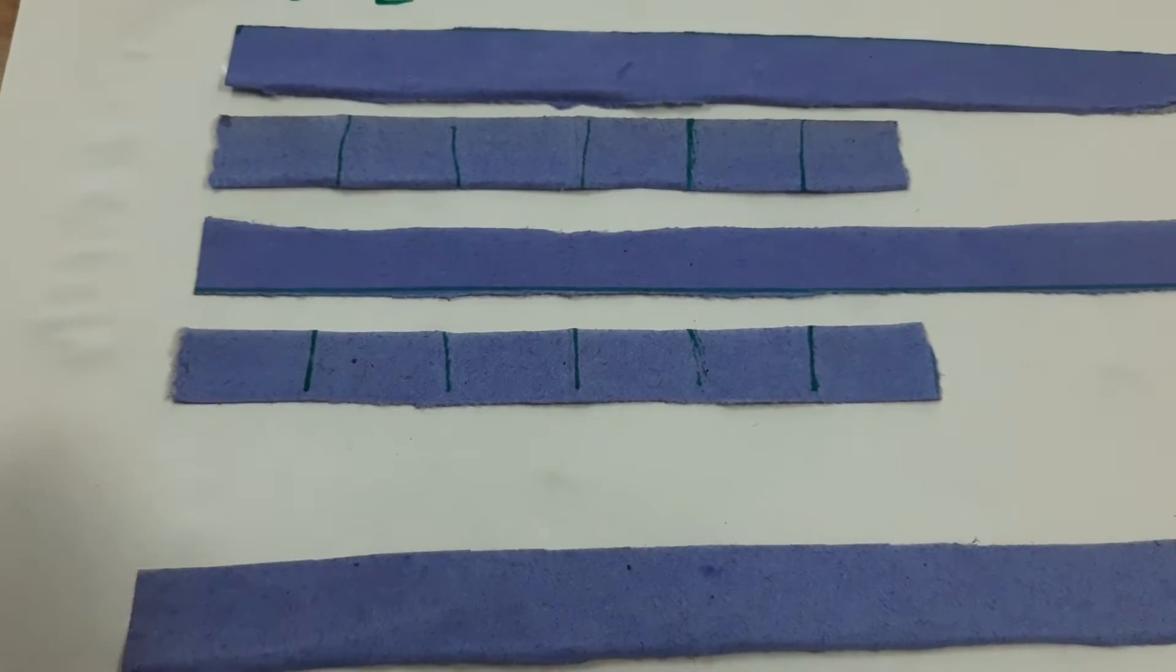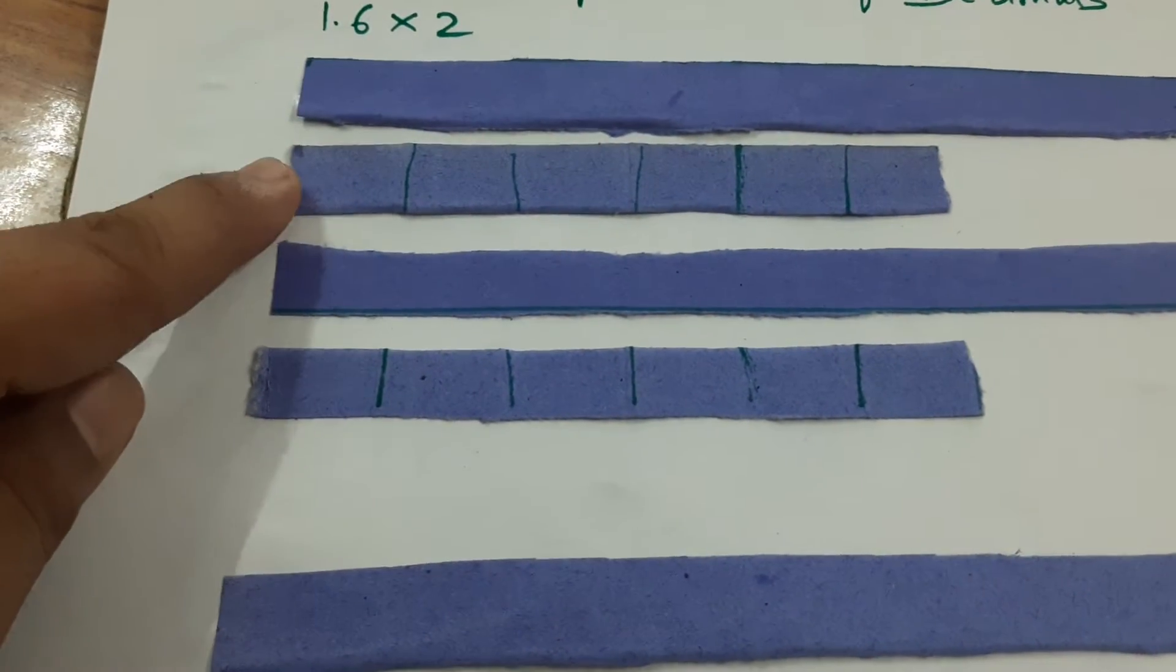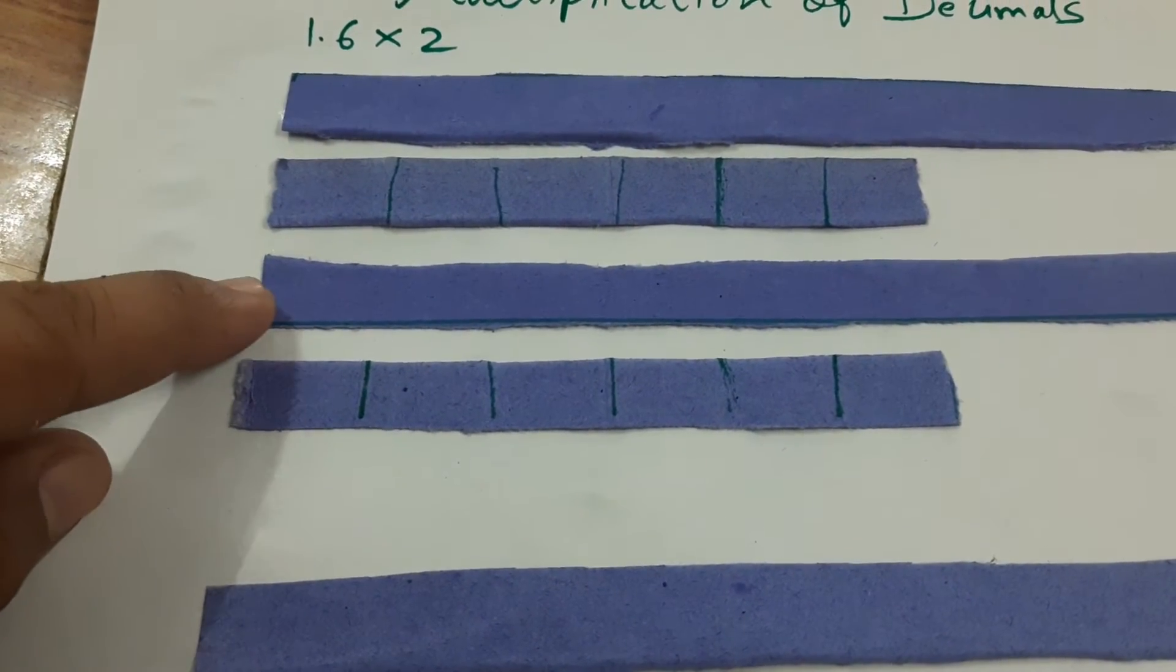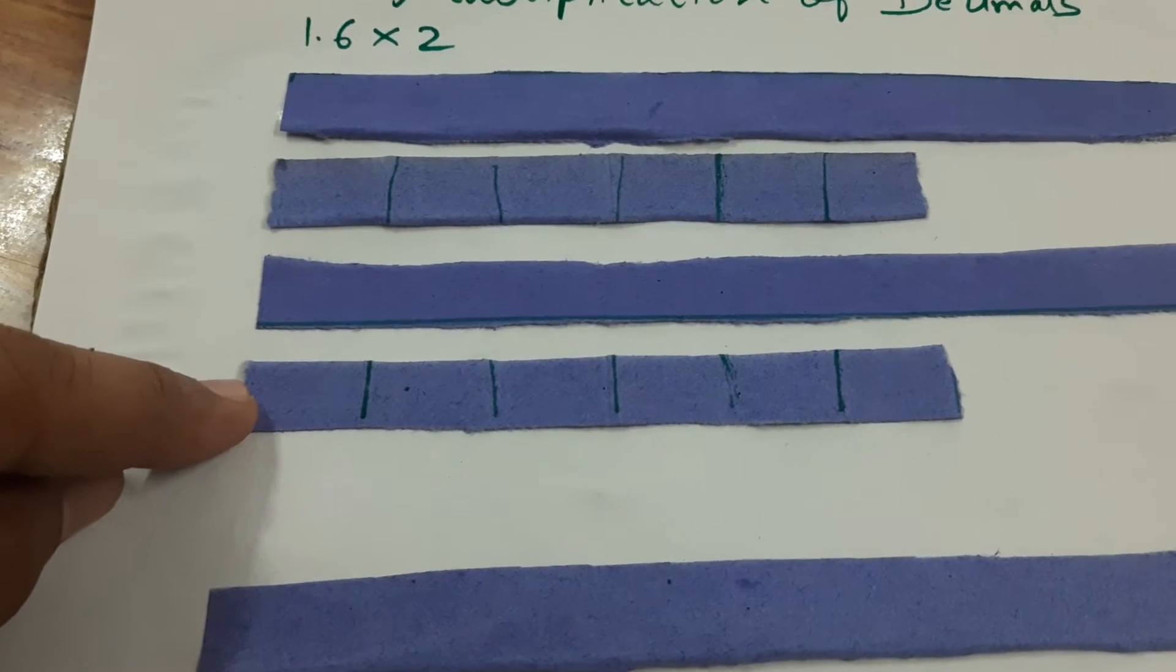So we got 1, 2, 3, 4, 5 and 6. So it is 0.6. Again 1 and 0.6.